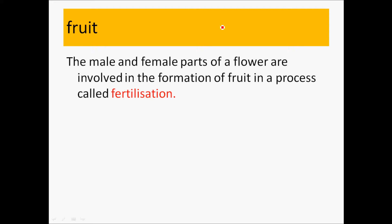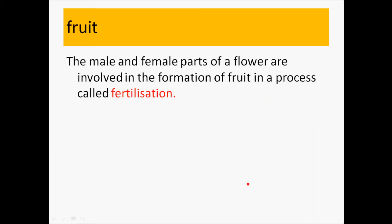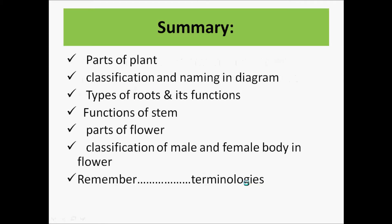Now moving on, how is fruit grown? The male and female parts of the flower are involved in the formation of a fruit and this process is known as fertilization. Pistil and stamen are involved in the process of fertilization, then a fruit is grown.